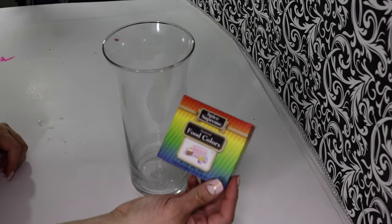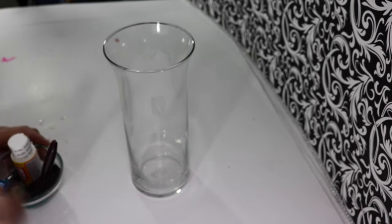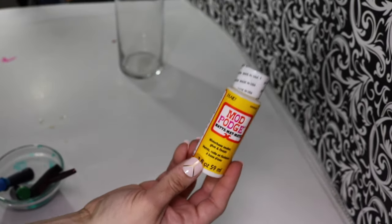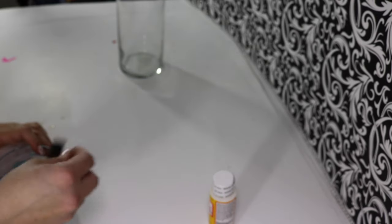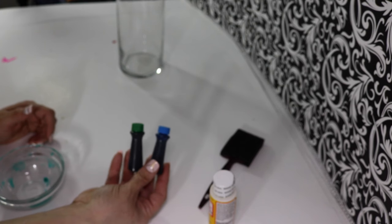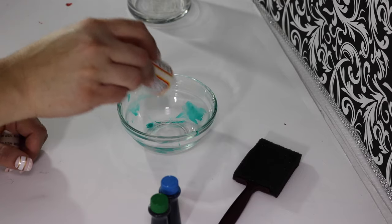I have here a nice large vase, also have some food coloring and some Mod Podge, also a brush, and I'm using the blue and green to make a teal color and you'll need a bowl to mix it.